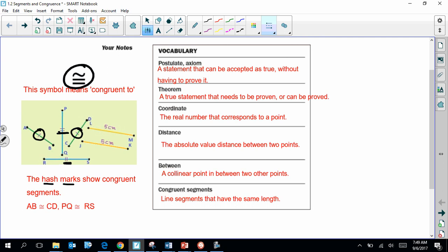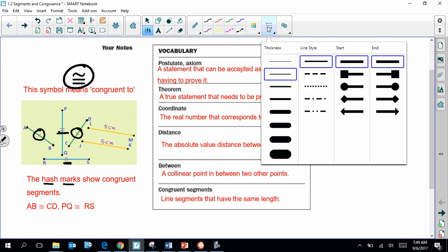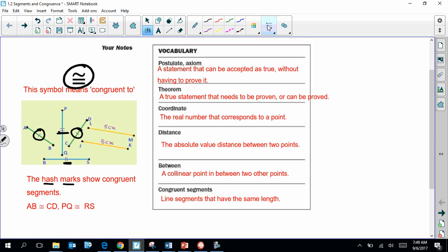Different numbers of hash marks indicate that they're not going to be congruent to each other. So segment AB will not be congruent to segment RS because AB has a single hash mark and RS has two hash marks. The symbol for congruent may be new, maybe it's not, but I want to make sure that you understand it moving forward.